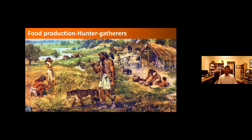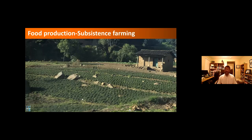For most of agricultural history, subsistence farming was the norm. Although there were some large-scale agricultural efforts here and there, most agricultural communities were producing just enough food in a small area to support the family and for some local trade. That's how it was for thousands of years.